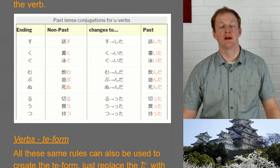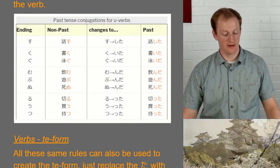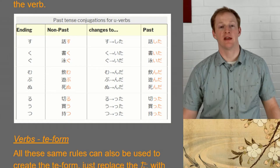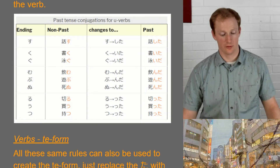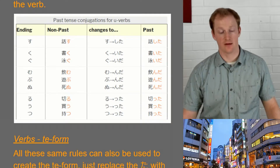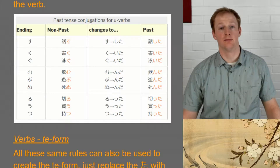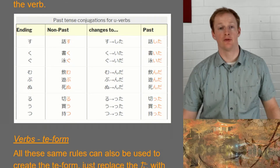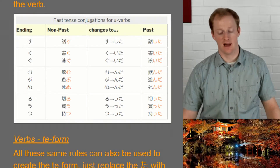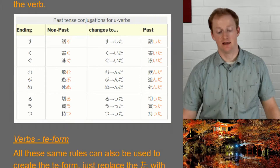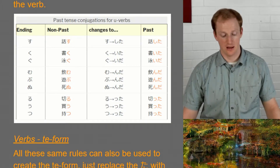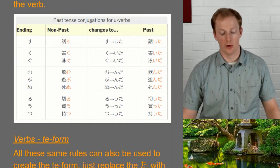The last category also has three entries: verbs that end in ru, u, or tsu — as u verbs. So we have kiru, kau, and motsu, and all three go to tta: kiru → kitta, kau → katta, motsu → motta.